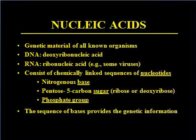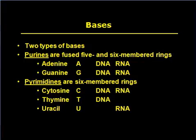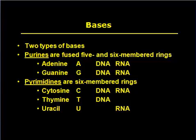Nucleic acid is the genetic material of all known organisms — DNA, like deoxyribonucleic acid and ribonucleic acid. Some viruses consist of nucleotides chemically linked with nitrogen bases and high carbon sugars. Bases include purines and pyrimidines; purines are adenine and guanine, and pyrimidines are cytosine, thymine, and uracil.